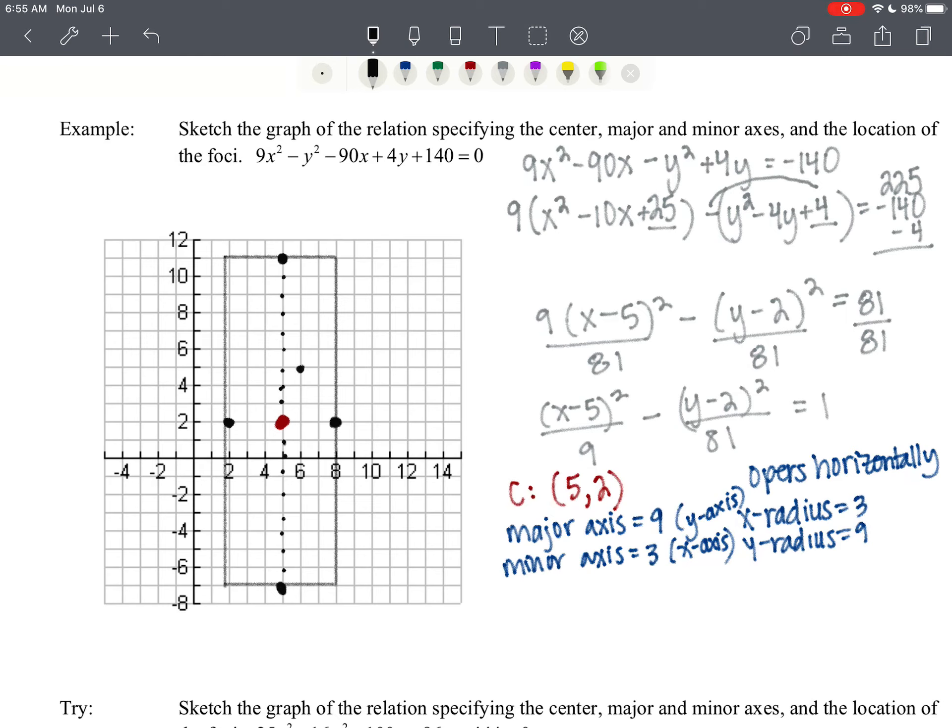And our slope is 9 over 3, or just 3. So up 1, 2, 3, right 1. [Repeating the counting pattern]. And I messed that up a little bit. There we go. And I'm just going to go for it here.